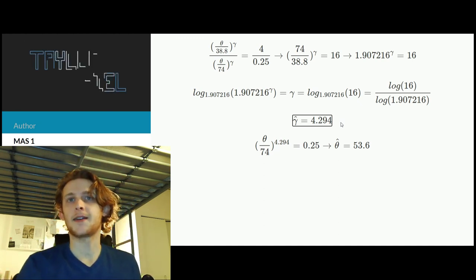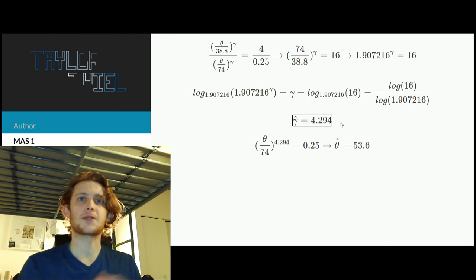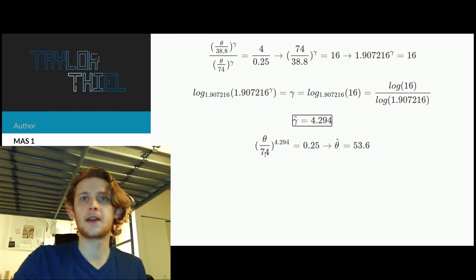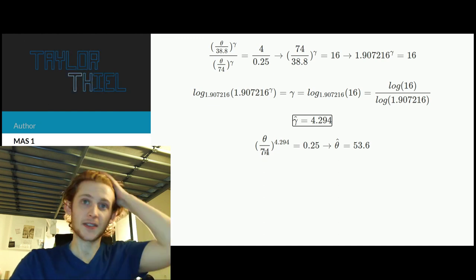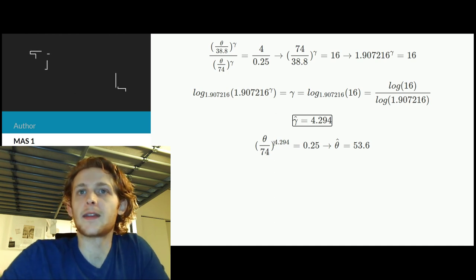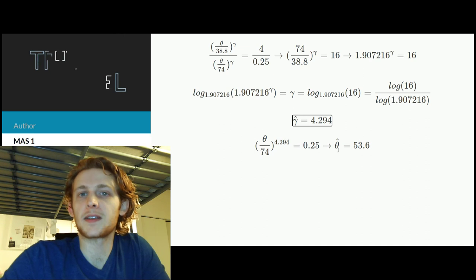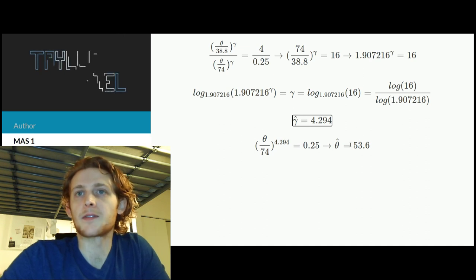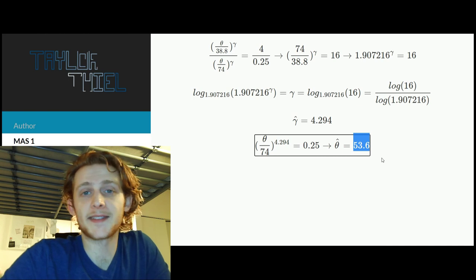And then the final step, the question is actually asking for the estimator for theta. So the final step is then to just pick one of the equations above. Here I chose the 80th percentile, but you could have chosen the 20th and that would have worked just fine. And then you solve for theta when you plug in that corresponding gamma hat, and that results in a final estimator of 53.6.